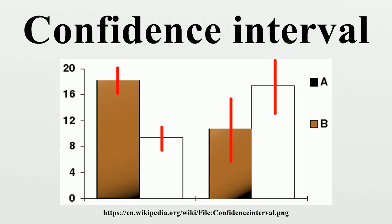Deborah Mayo expands on this further: it must be stressed that having seen the value of the data, Neyman-Pearson theory never permits one to conclude that the specific confidence interval formed covers the true value of zero with either 100% probability or 100% degree of confidence. Seidenfeld's remark seems rooted in a desire for Neyman-Pearson confidence intervals to provide something which they cannot legitimately provide — namely, a measure of the degree of probability, belief, or support that an unknown parameter value lies in a specific interval. Following Savage, the probability that a parameter lies in a specific interval may be referred to as a measure of final precision. While a measure of final precision may seem desirable, and while confidence levels are often interpreted as providing such a measure, no such interpretation is warranted. Such a misinterpretation is encouraged by the word confidence.